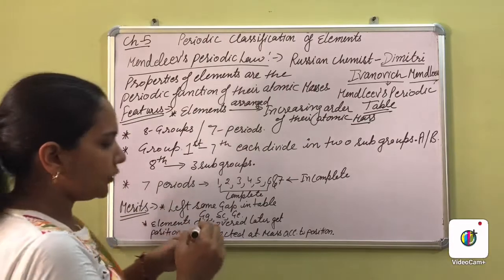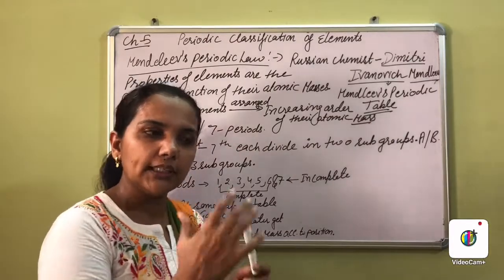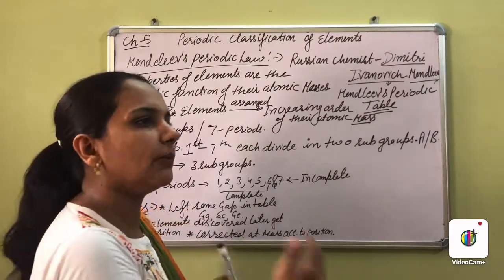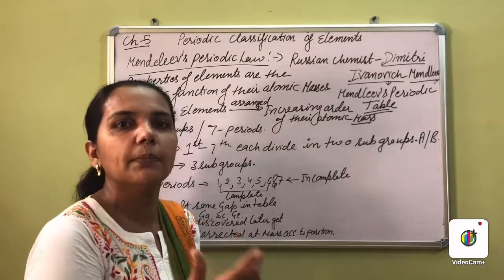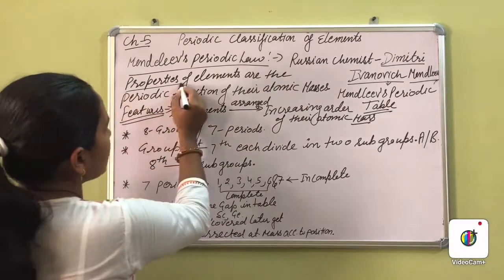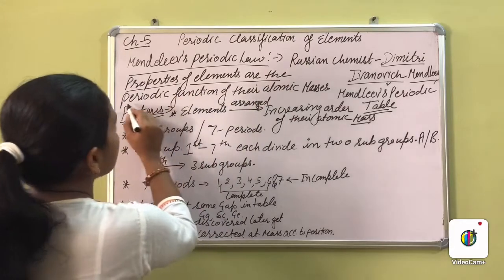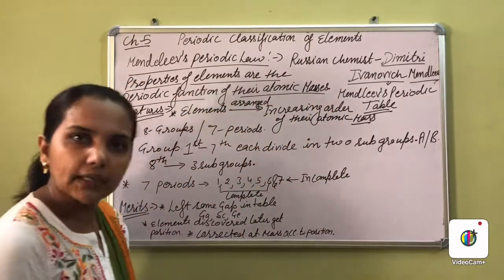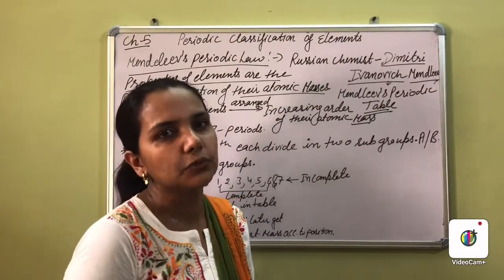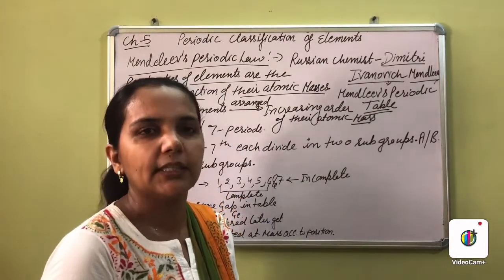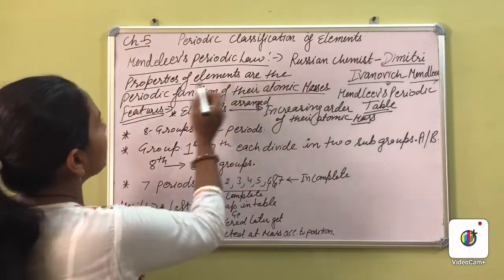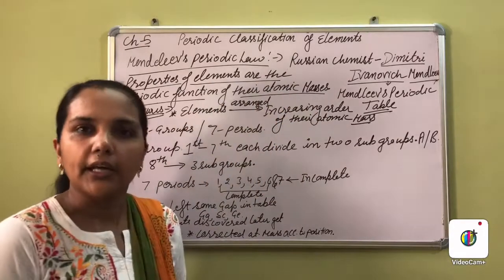Mendeleev created this table based on a law. He arranged all the elements on the basis of this law. That law states: the properties of elements are the periodic function of their atomic masses. This means the properties of any element depend upon its atomic mass.